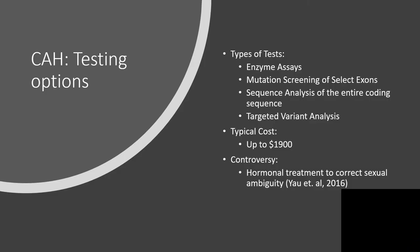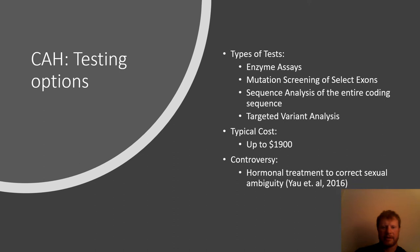Testing options include sequence analysis of the entire coding sequence and targeted variant analysis. It's kind of hard to find pricing for this, but one price I found was up to $1,900, and it might cost more depending on which test you get. There's also a little bit of controversy surrounding the testing — some of it had to do with the invasiveness of prenatal testing, and another interesting one was the controversy surrounding hormonal treatment to correct sexual ambiguity in boys and girls born with this. Some people felt it's necessary and others felt that it's not.